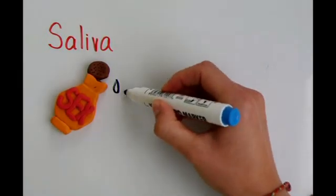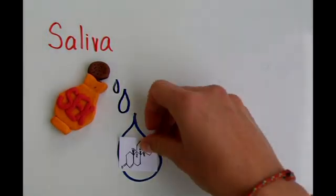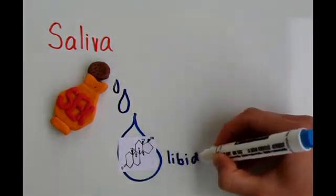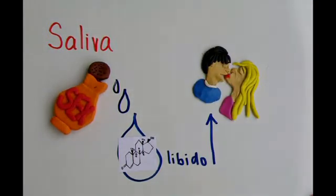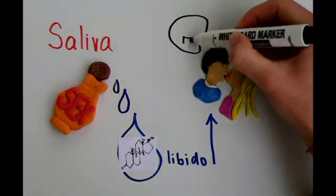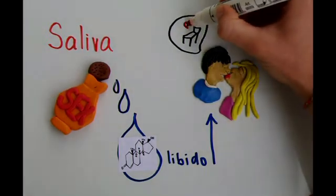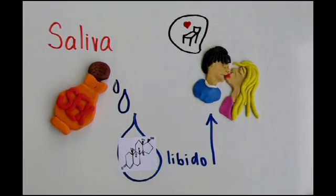It has been discovered that saliva contains testosterone that stimulates libido. This property is subconsciously used by men who try to increase the amount of testosterone in their partners and turn them on by the means of kissing. Studies suggest that this is possibly the reason why men like sloppier kisses more than females.